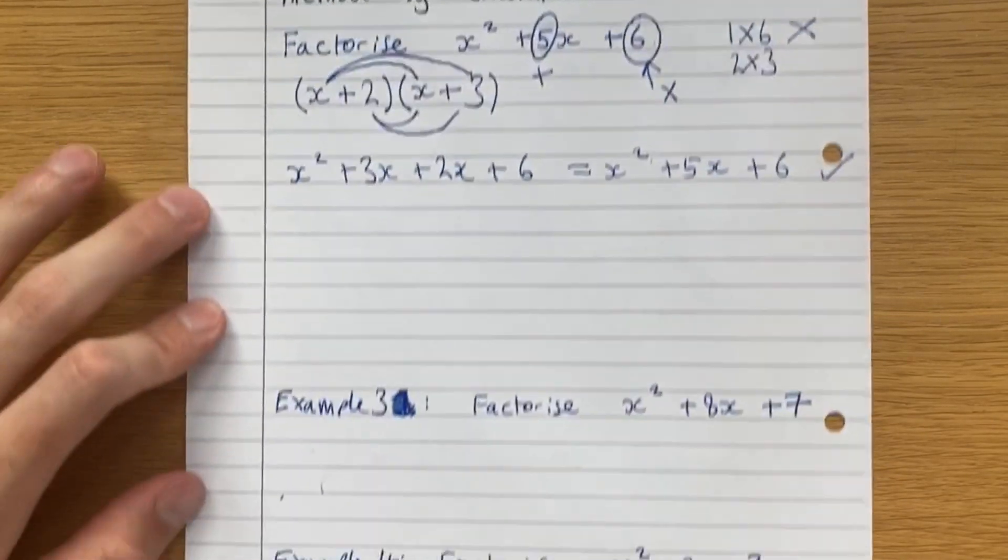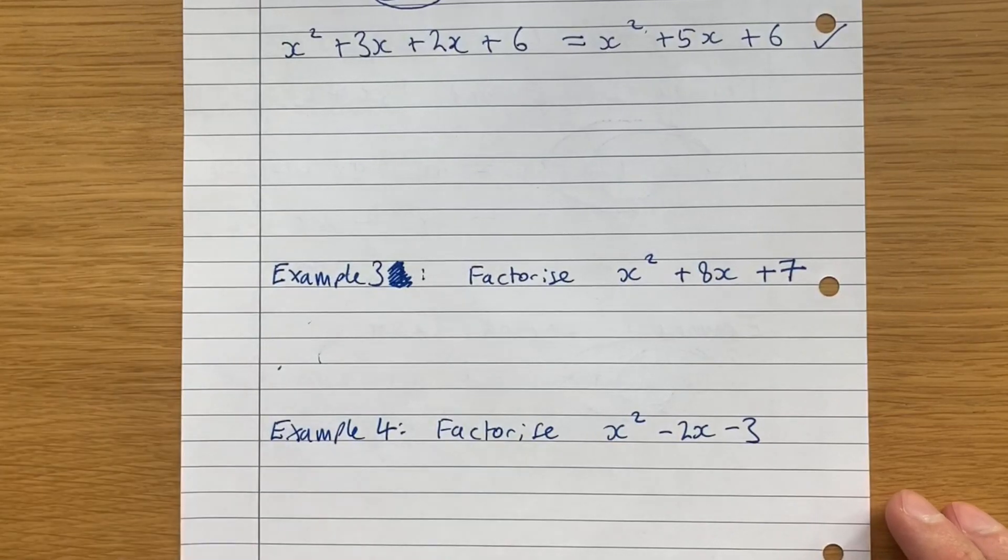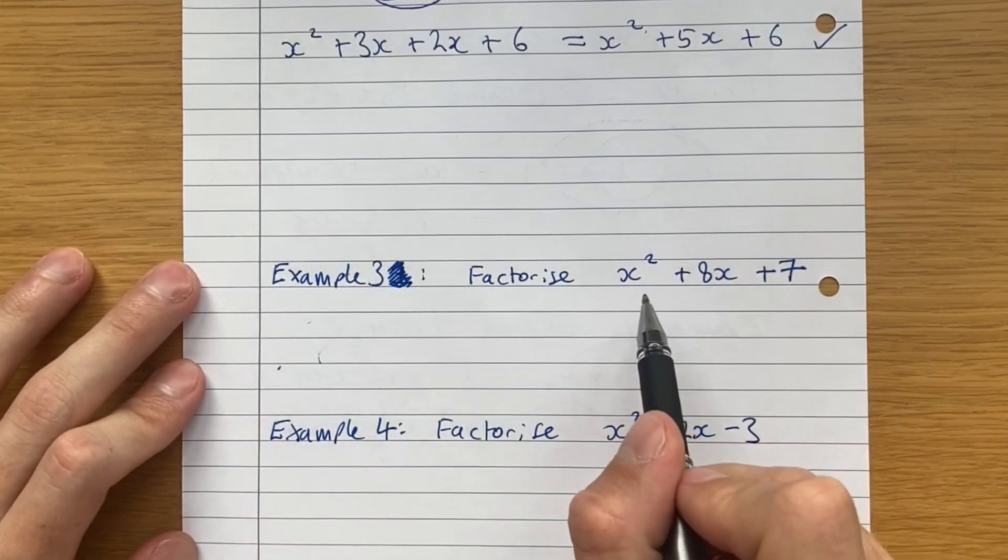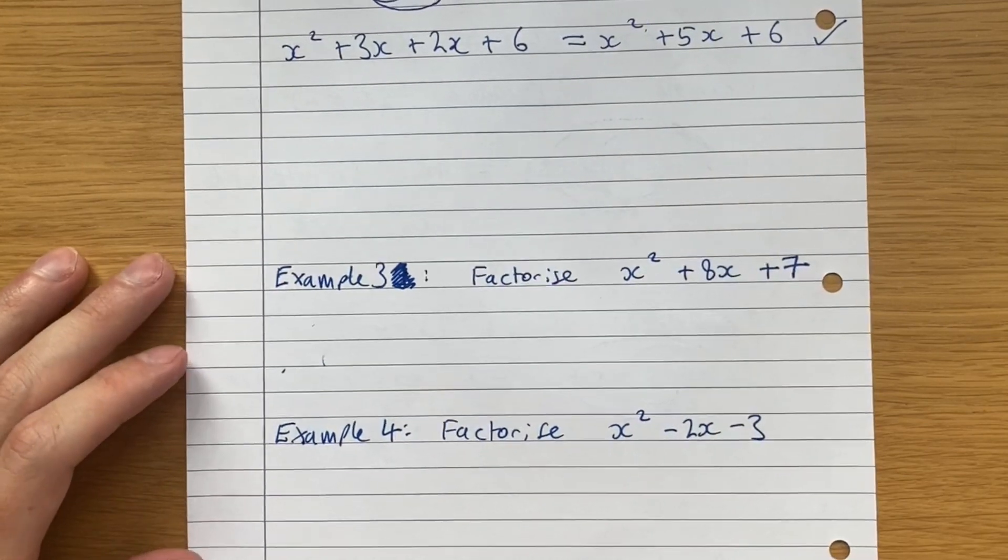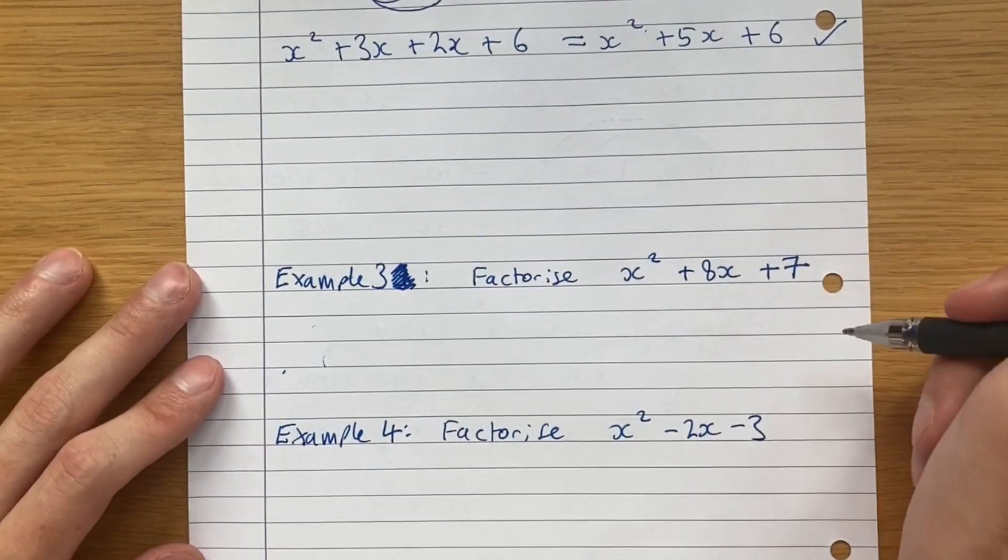So let's do another example. That's the best way to learn this. Just doing loads and loads of examples. See, it's very methodical. So x squared plus 8x plus 7. So same as before. Factors of 7. Well, luckily in this case, it can only be 7 times 1, right? Because those are our only factors of 7.